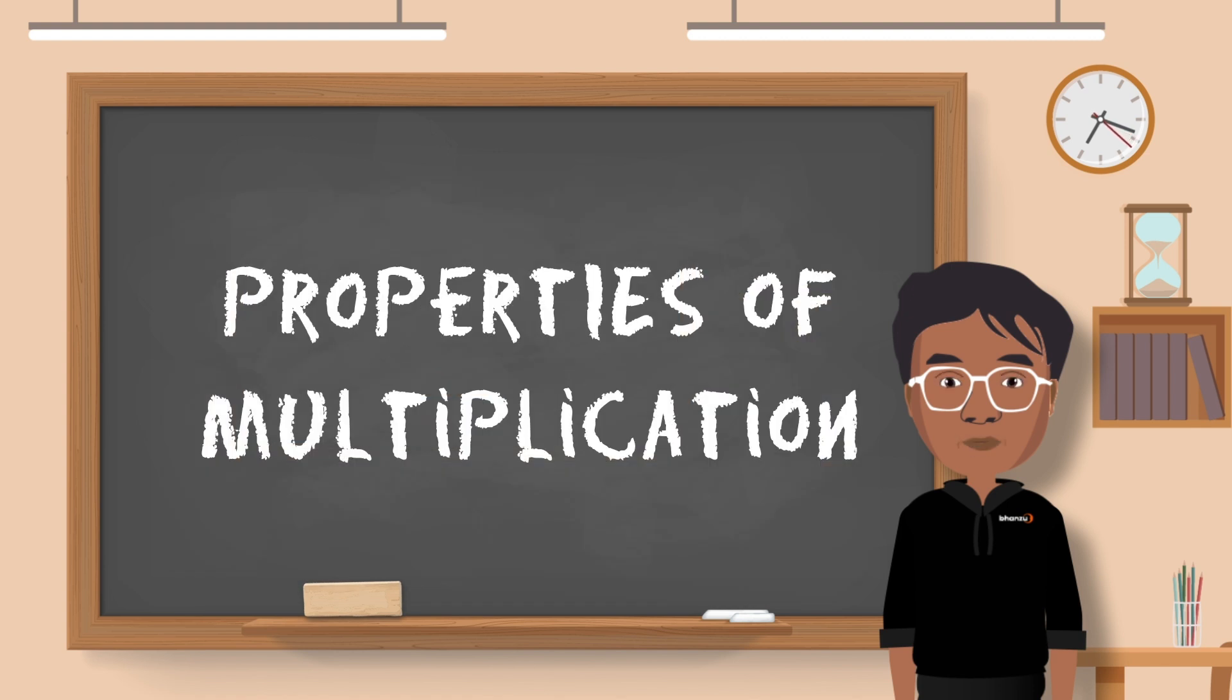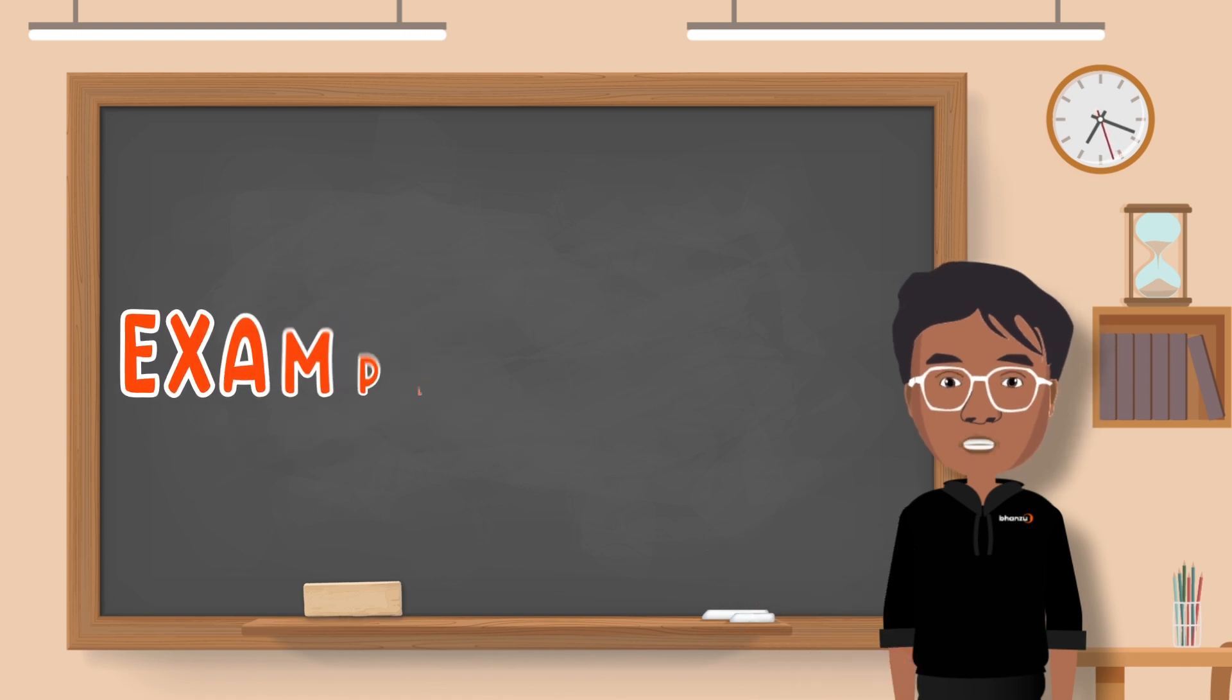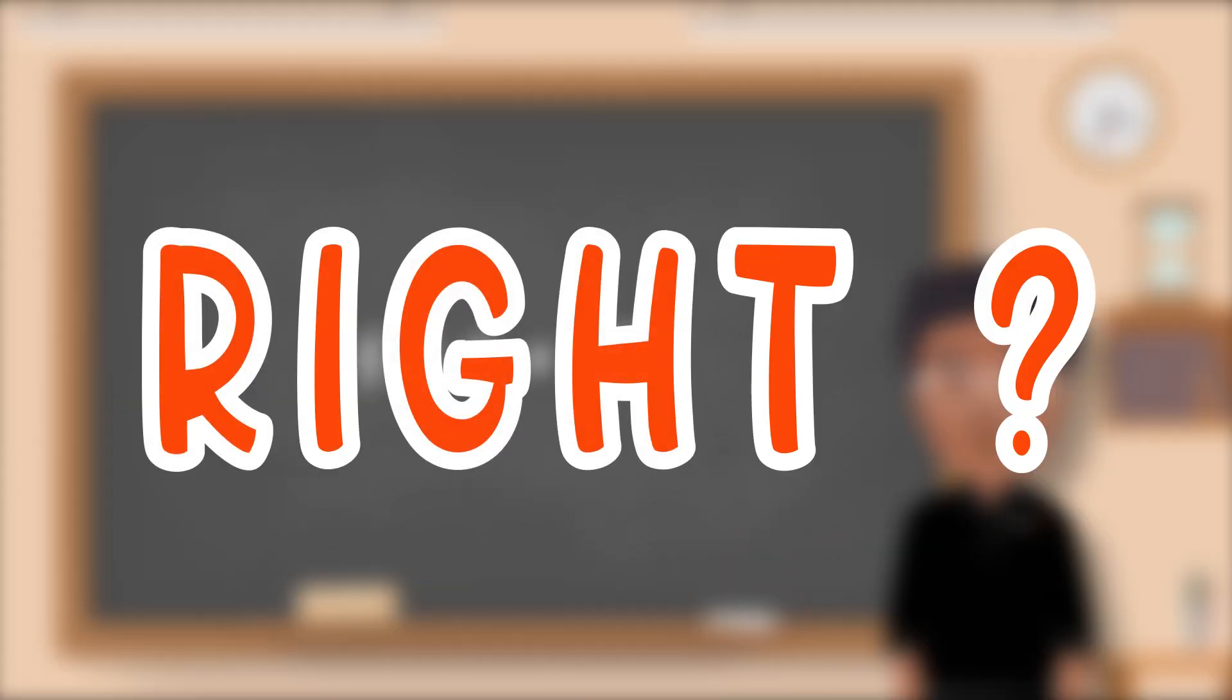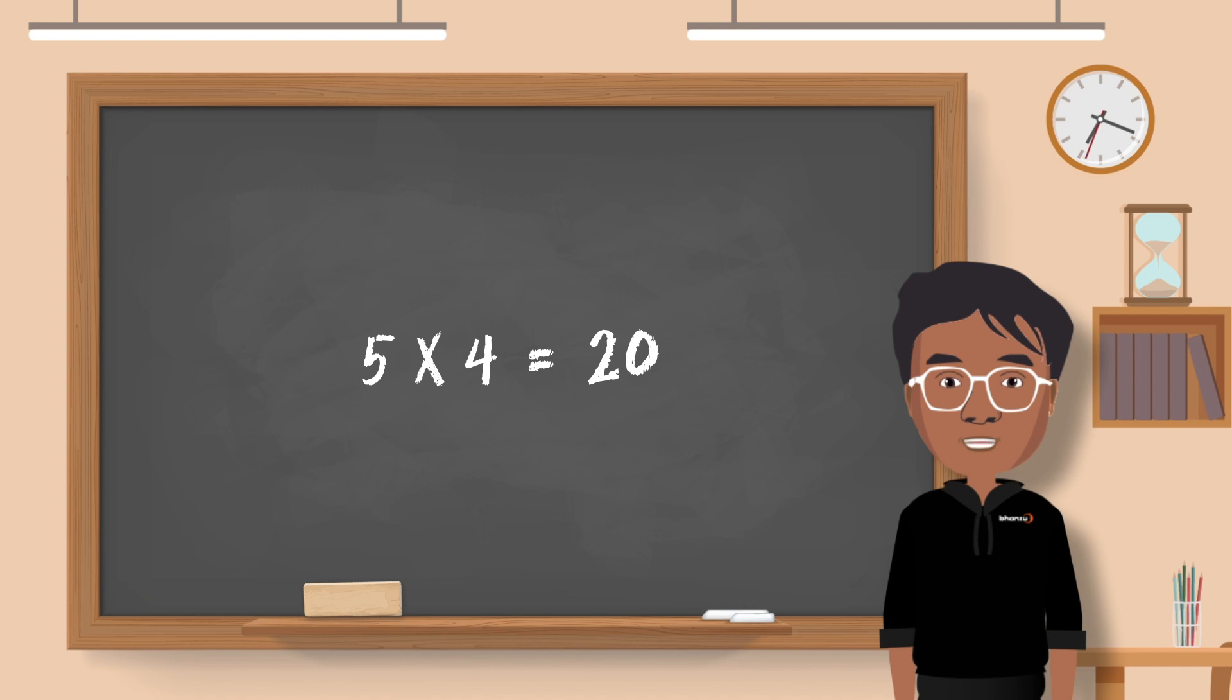Let's understand the properties of multiplication using an example. What is 5 multiplied by 4? 20, right? But what is 4 multiplied by 5? Isn't that 20 as well?